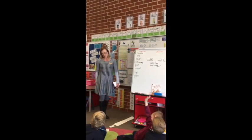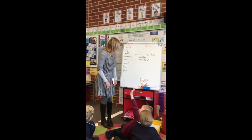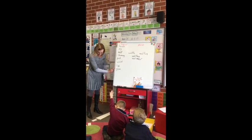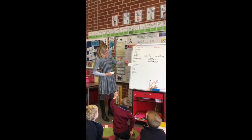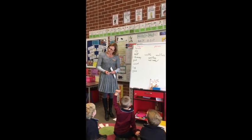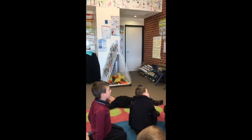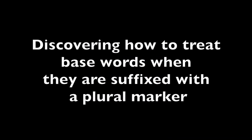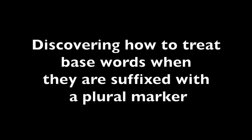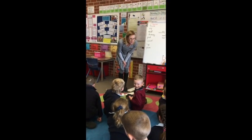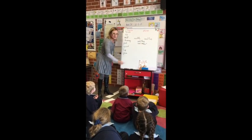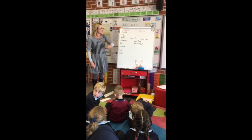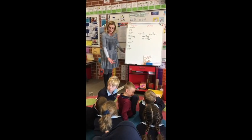Now, I don't understand. For all of these other ones, we only had to add an S. But for wolves, we had to change the F to a V and add E and S. Who can work out why we need to put V-E-S here? Why don't we just put an S? We did it everywhere else, didn't we?